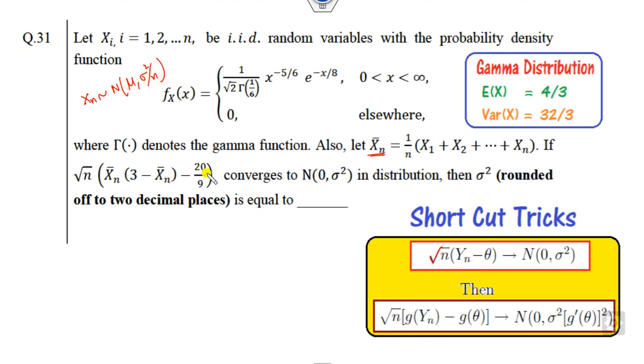Then this is my function, this is my g of y. This is y times 3 minus y. Then g of theta. So what is g of this mean? What is g of 4 by 3? So 4 by 3 times 3 minus 5 by 3 is 20 by 9. So this condition is satisfied.